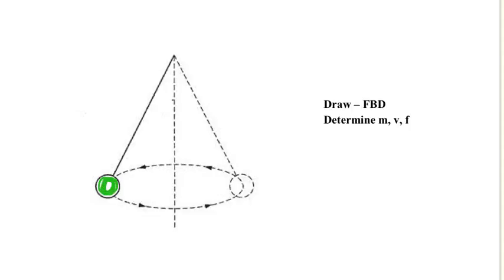For this given question, we have this ball that is attached to a string of length L and it swings in a horizontal circle, and the string makes an angle of theta with the vertical.